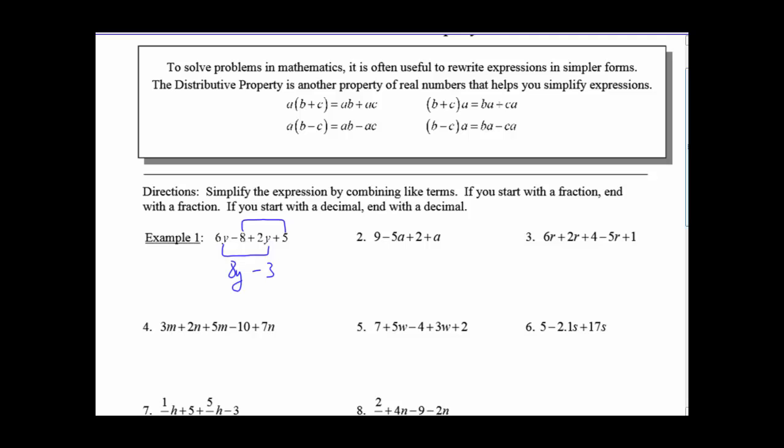Okay, let's see how you did. You should have gotten for 2 negative 4A plus 11. And for 3, we should have 3R plus 5. If you notice, we had 3's here. So that really becomes 8R minus 5.